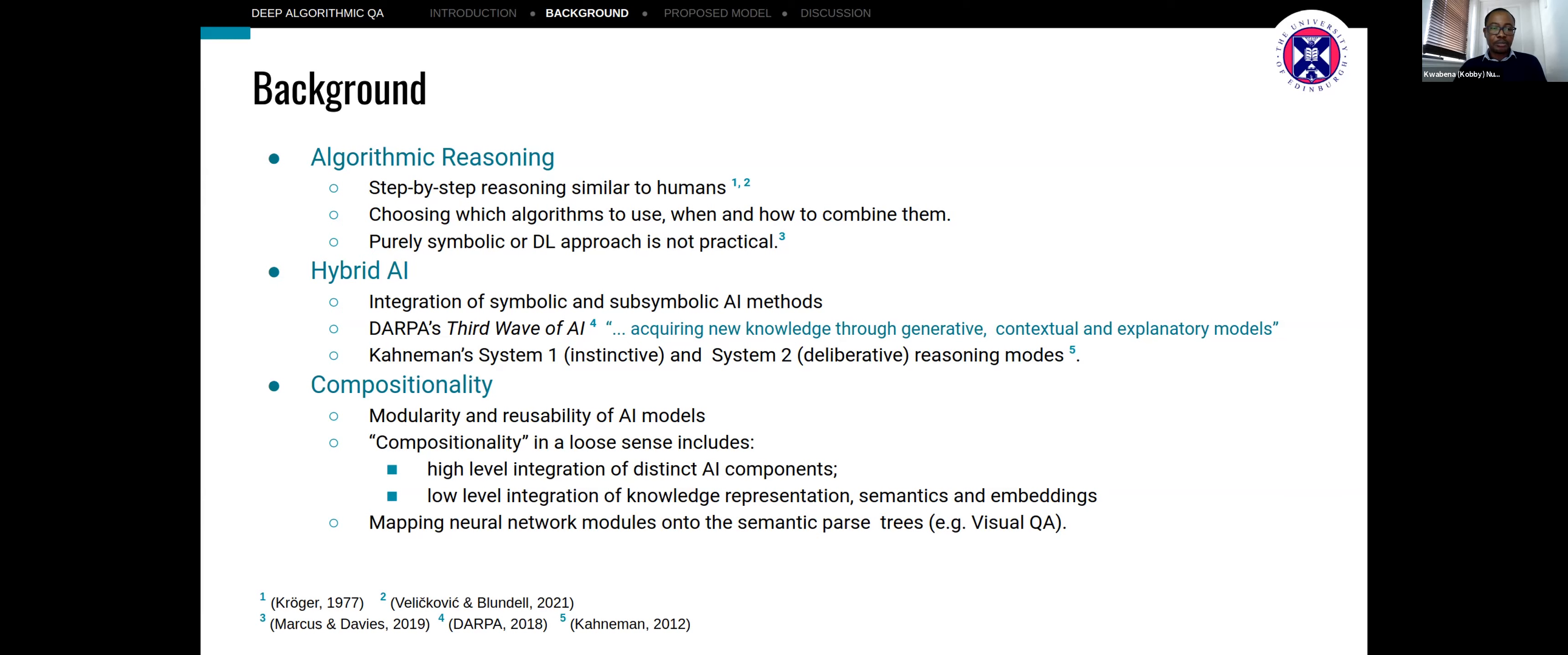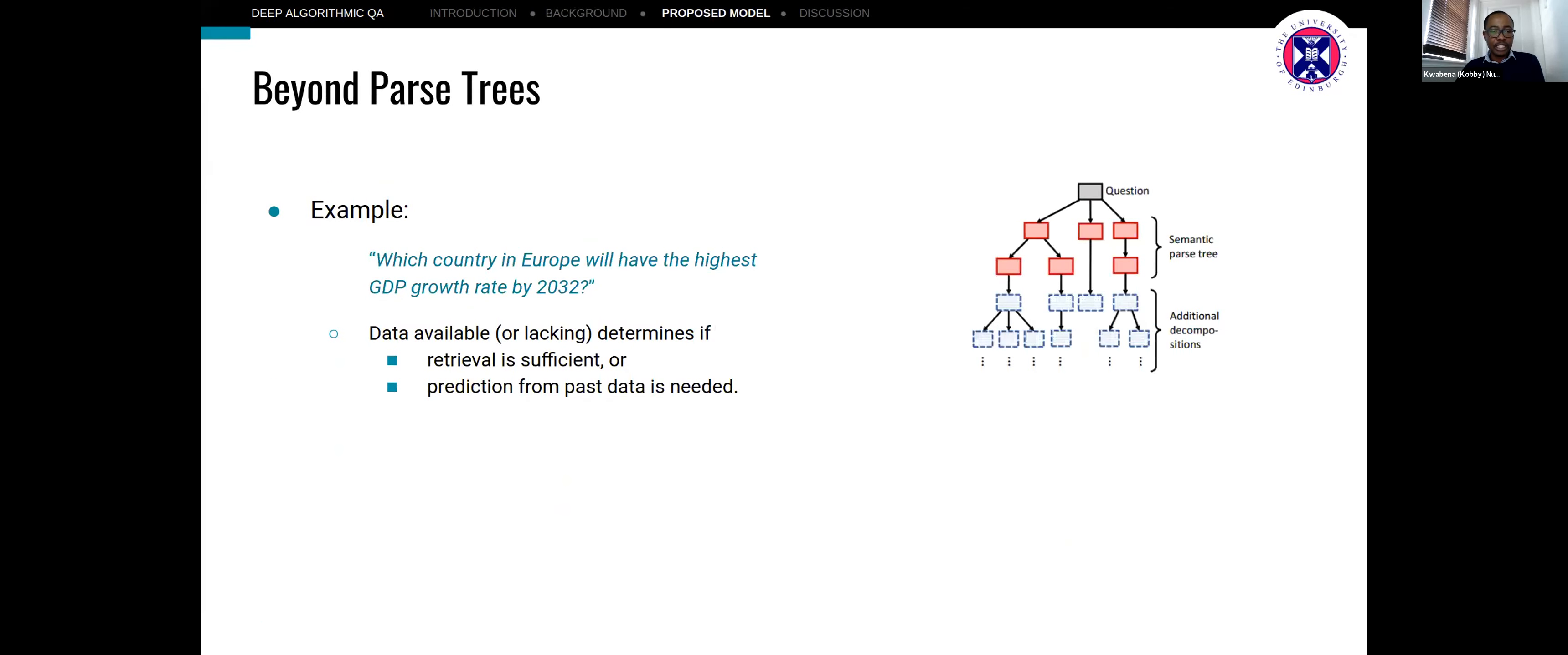Most approaches to compositionality usually focus on using the semantic parses that are generated for natural language questions to build architectures or neural architectures for answering questions. However, we think that we need to look beyond that because it has its limitations. For instance, to answer a question such as: which country in Europe will have the highest GDP growth rate by 2032?